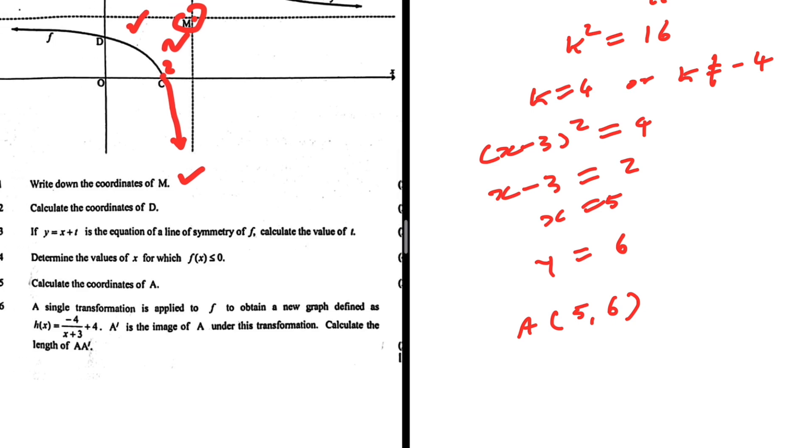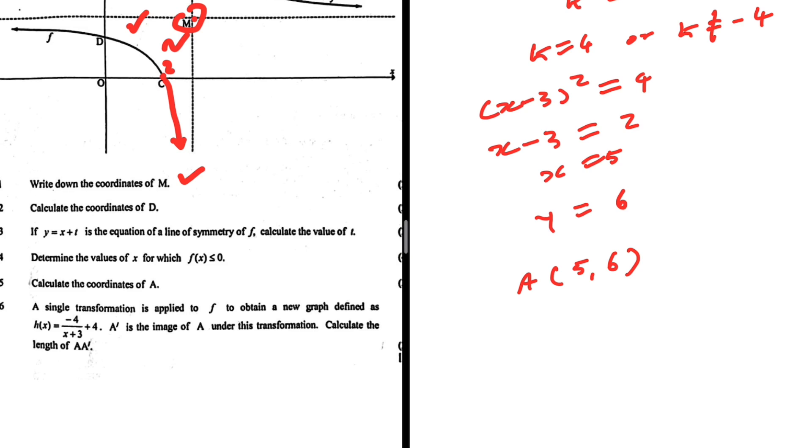And then 4.6, a single transformation is applied to f to obtain a new graph defined as h(x) equals minus 4 over x plus 3 plus 1. A prime is the image of A under this transformation. Calculate the length of AA prime. So calculating the length is quite easy. Obviously, what you need is to find the coordinates of A prime. So tell me, when you determine the coordinates of A prime, what do you get? Let me know in the comments.